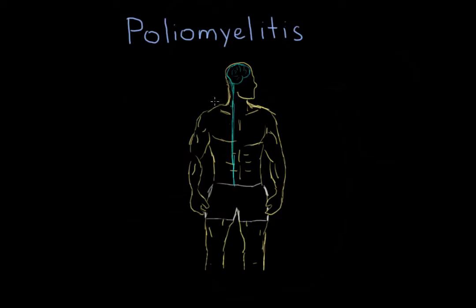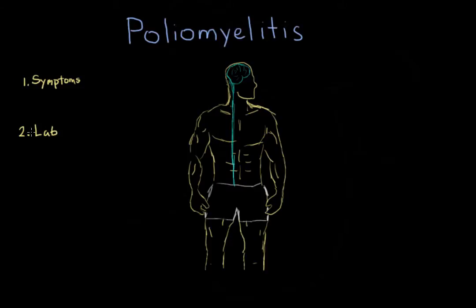Diagnosis of poliomyelitis is really based off of two things. First, you're going to want to think about what symptoms the patient is having. The symptoms should paint a clearer picture of polio and get you thinking about it. To confirm the diagnosis, the next step is to look at specific lab tests that will determine that there is actually an active polio infection in the body. So, what are the symptoms we can see?